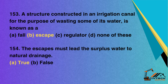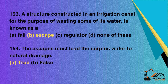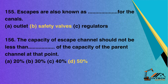Question 153: A structure constructed in an irrigation canal for the purpose of wasting some of its water is known as — A. Fall; B. Escape; C. Regulator; D. None of these. Correct option: B. Escape. Question 154: The escapes must lead the surplus water to natural drainage — A. True; B. False. Correct option: A. True. Question 155: Escapes are also known as, for the canals — A. Outlet; B. Safety valves; C. Regulators. Correct option: B. Safety valves.